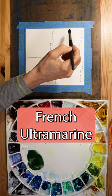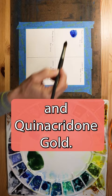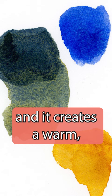French ultramarine and quinacridone gold. This is a warm granulating blue combined with a warm golden yellow, and it creates a warm dark green.